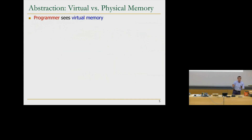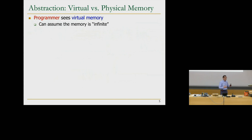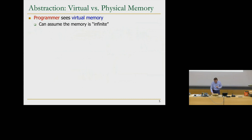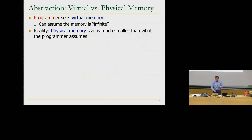So far we've assumed everything is physical. But in real life, a programmer sees virtual memory. This means the programmer can assume memory is infinite. So if you have a limited size memory, you can provide the illusion to the programmer that there's actually a lot more memory, so that the programmer doesn't need to manage memory. It's another example of a classic programmer-microarchitect trade-off.